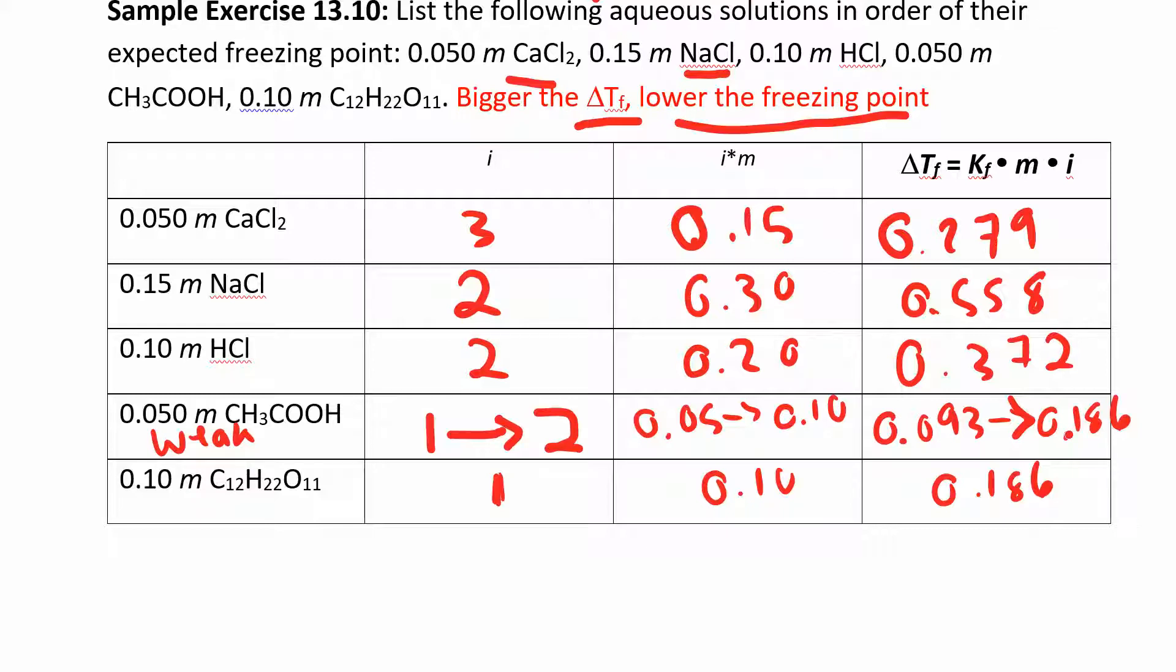All right. So whoever has the biggest freezing point depression has the lowest freezing point. So that would be sodium chloride. That's going to have the lowest freezing point. And then comes HCl in this case. Again, the freezing point depends on the van't Hoff factor. So it depends on how many moles of your solute you have, as well as the molality, right? So molality and the van't Hoff factor will affect the freezing point. Everybody has the same Kf, right? Because this is in water, which depends on the solvent.